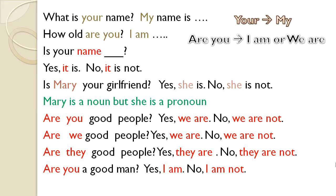Is Mary your girlfriend? You could also say: is she your girlfriend? But when you ask someone for the first time, you would probably use the actual person's name — Mary. Is Mary your girlfriend? Yes, she is. No, she is not. Are you, they, we good people? Yes, we are good people. Yes, they are good people. Or no, we are not good people. No, they are not good people. Remember that the pronoun 'you' can be singular or plural — and you would know that from the question itself.